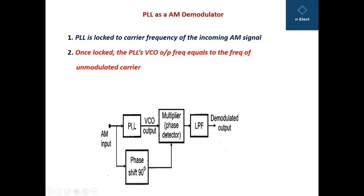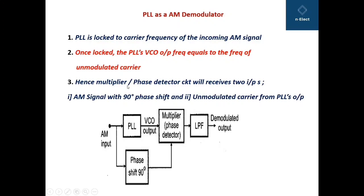The PLL is locked to the carrier frequency of the incoming amplitude modulated signal. This PLL is locked to the carrier frequency of the AM signal and therefore you will get the unmodulated carrier output. Once the PLL is locked, the VCO output frequency equals the frequency of the unmodulated carrier. Hence, the multiplier or phase detector circuit will receive two inputs: one is the AM signal with 90 degree phase shift, and the second is the unmodulated carrier from the PLL's output.